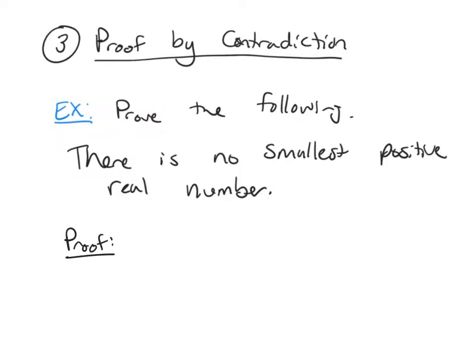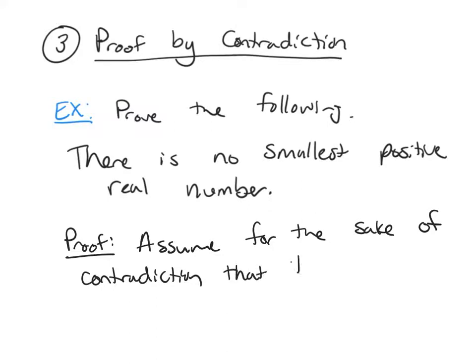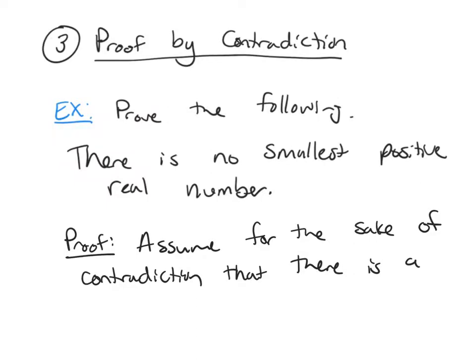When you're doing a proof by contradiction, you assume the opposite of what you're trying to show. So assume, and when I'm doing a proof by contradiction, I always say assume for the sake of contradiction that there is a smallest positive real number.